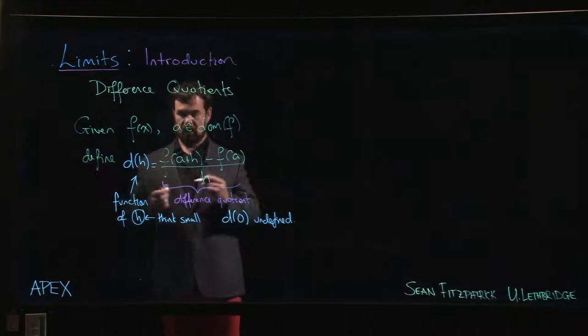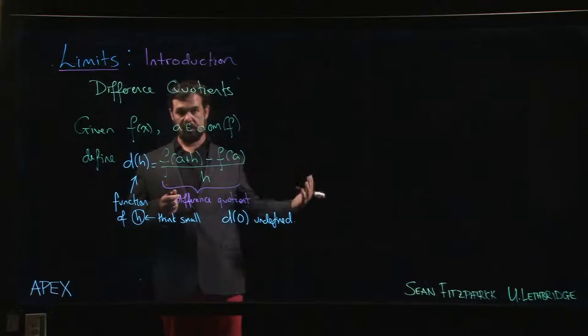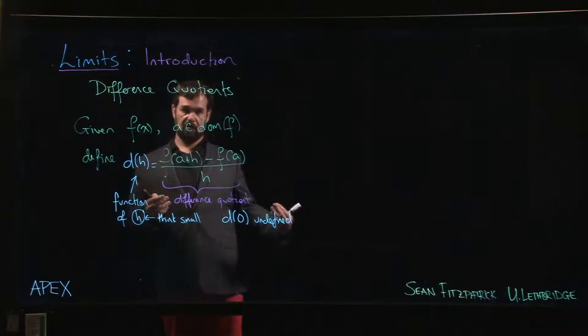Because if I put h equal to zero, well, it's there in the denominator—can't divide by zero. But of course the numerator will be f of a minus f of a, also zero. So this is a zero over zero limit. In some sense, every single derivative, once we get to talking about derivatives, is a zero over zero limit. So there's a reason why we want to get proficient in calculating limits that have this indeterminate zero over zero form.